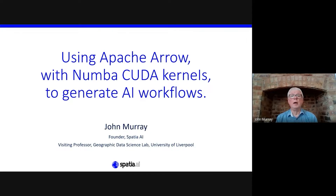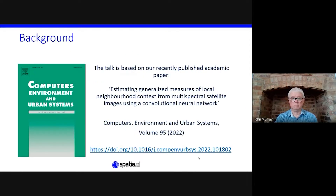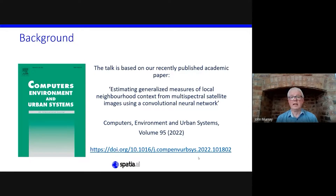Today I'm going to be showing you how to use Apache Arrow with Numba CUDA kernels to generate AI workflows. The talk is based on our recently published academic paper estimating generalized measures of local neighborhood context from multi-spectral satellite images using a convolutional neural network. In more plain English, we used an autoencoder neural network to attempt to classify neighborhoods with unsupervised classification from satellite imagery.